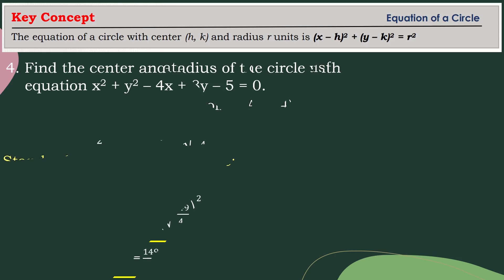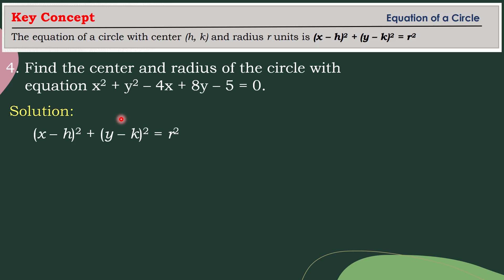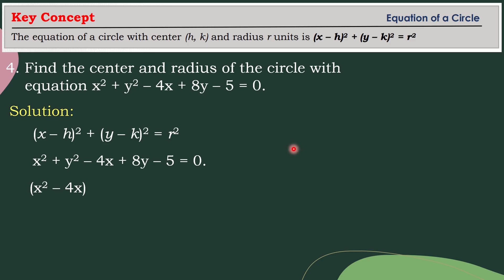Let's have another example. Find the center and radius of the circle with equation x squared plus y squared minus 4x plus 8y minus 5 equals 0. We are going to use the standard equation of the circle as our pattern. Next, we are going to separate the terms with x variable from the terms with y variable and from the constant. It will become: x squared minus 4x, plus y squared plus 8y, and the constant is transposed to equal 5.